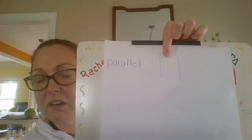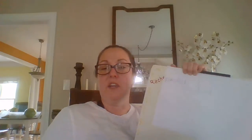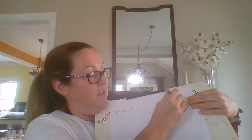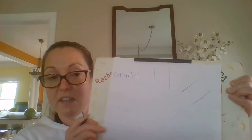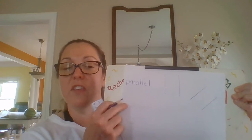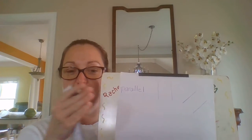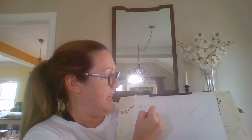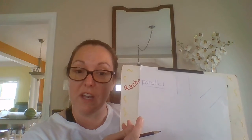Parallel lines are the same distance apart up here as they are down here. You could also turn your ruler and draw parallel lines going diagonally — as long as they're the same distance apart, they're parallel. Think of the parallel bars on the playground. Today we're going to look at quadrilaterals that have sometimes two sides that are parallel, or more.